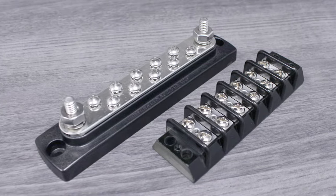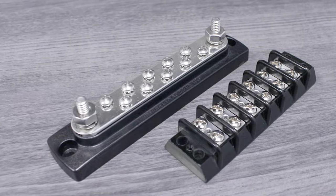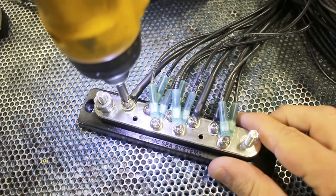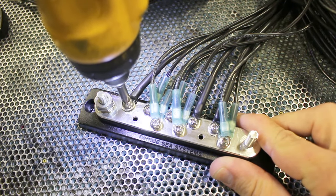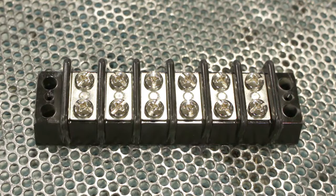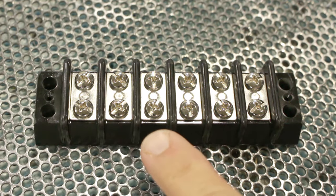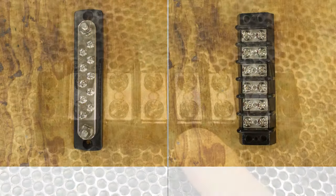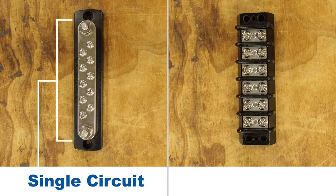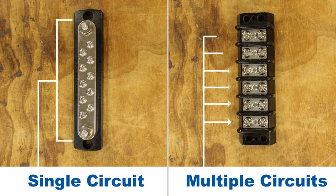Although they have similar visual appearances, bus bars and terminal blocks serve very different purposes. The main difference between a bus bar and a terminal block is that a bus bar gathers multiple wires together for electrical distribution in a single circuit. By contrast, a terminal block has separate circuits where each incoming wire is paired with an outgoing wire. A simple way to think about it is that a bus bar is a single circuit and a terminal block is multiple individual circuits.